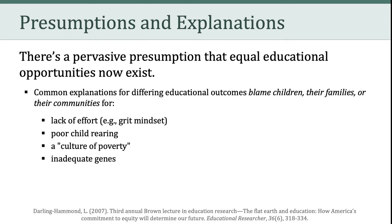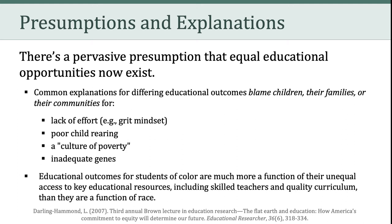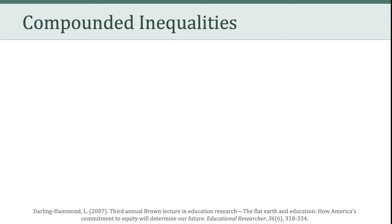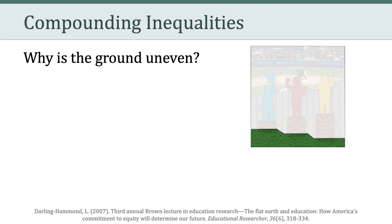She explains that common explanations for differing educational outcomes blame children, their families, or their communities. What do they blame these folks for? They blame them for a lack of effort, for poor child rearing, a culture of poverty, and inadequate genes. However, Darling-Hammond counters, saying that educational outcomes for students of color are much more a function of their unequal access to key educational resources, including skilled teachers and quality curriculum. She also raises the important idea of compounding inequalities, and if we connect this to our illustrated metaphor, we can ask ourselves: why is the ground so uneven?